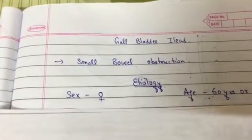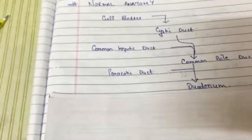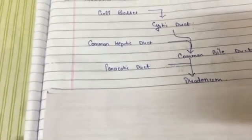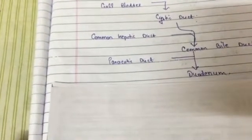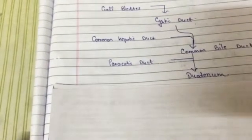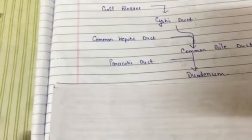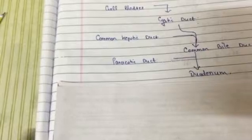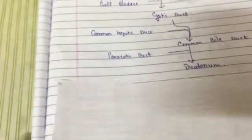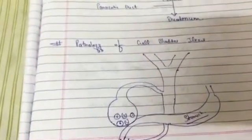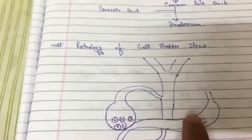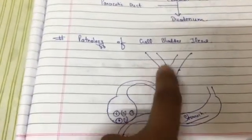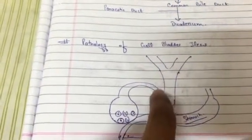Now I will talk about the pathology — how does the gallstone enter the ileum? For the gallstone to enter the ileum, there should be a path. This path is provided because of the inflammation of the gallbladder. In this figure you can see I have made a gallbladder — this is the gallbladder, and this is the common hepatic duct.